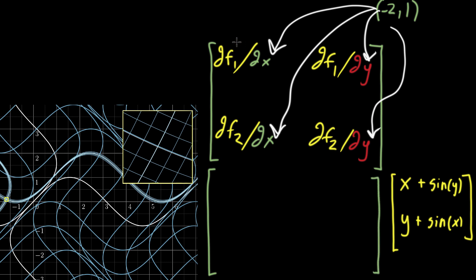So for that upper left component, we're taking the partial derivative with respect to x of the first component. So we look up at this first component, and the partial derivative with respect to x is just 1, since there's 1 times x plus something that has nothing to do with x.